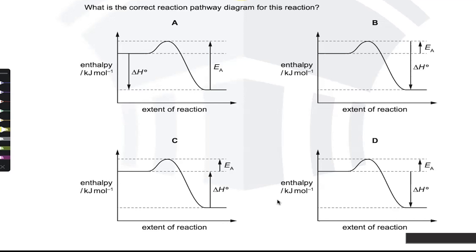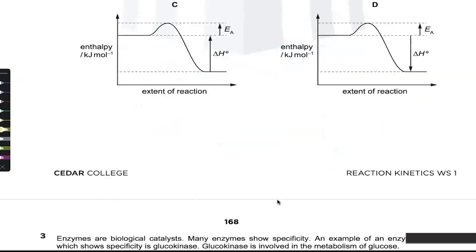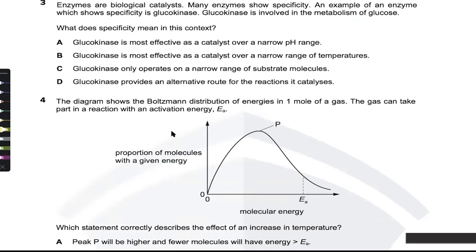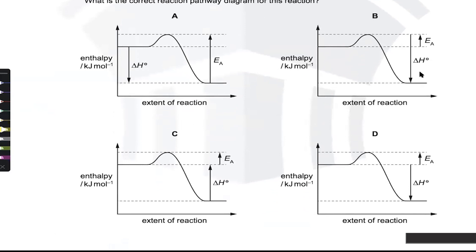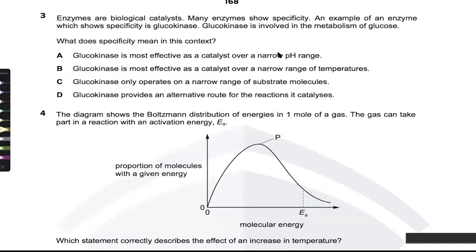Moving on — enzymes are biological catalysts. Option B is wrong for the energy diagram because delta H must start at the reactants level, not the highest point. An example of enzyme specificity is glucokinase, which is involved in the metabolism of glucose.